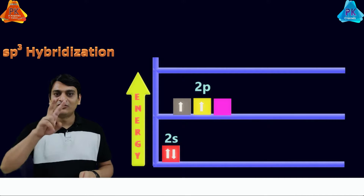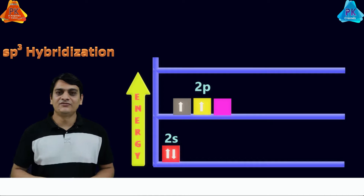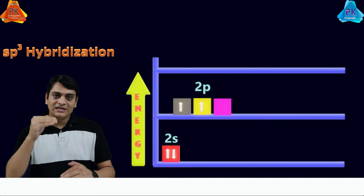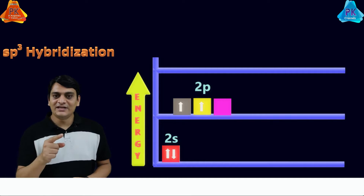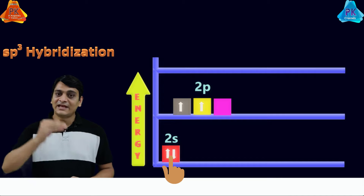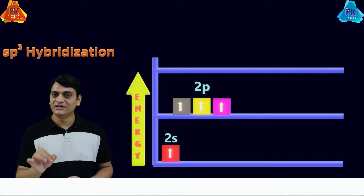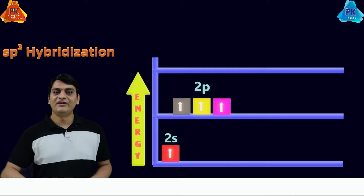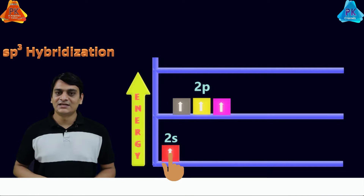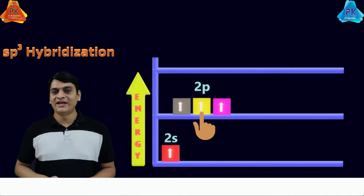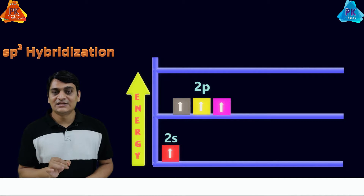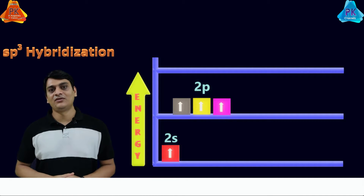In the ground state, 2 electrons are present in 2s, 1 electron in px, and 1 electron in py. Now in the excited state, 1 electron from 2s gets excited and moves into a p orbital. Now we have 4 orbitals — 2s, 2px, 2py, and 2pz — each containing a single electron.